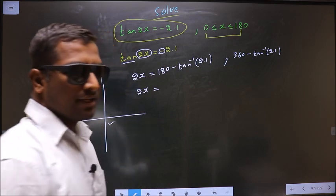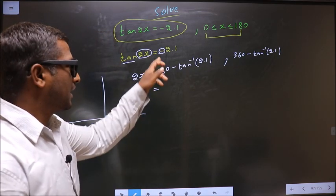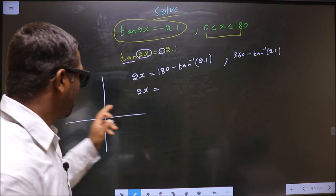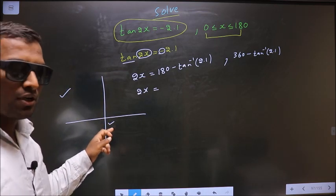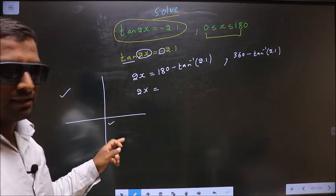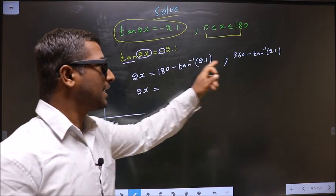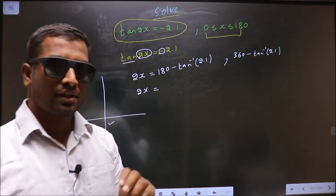Now, remember this. The negative sign is used only for selecting the quadrants. Once quadrants have been selected, do not place negative sign again here. Remember that.